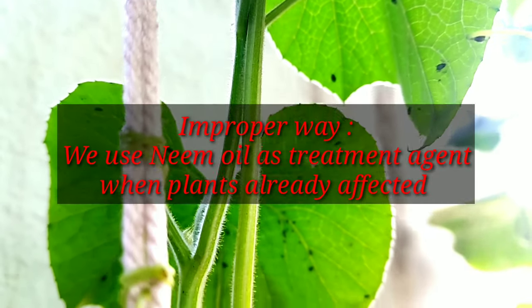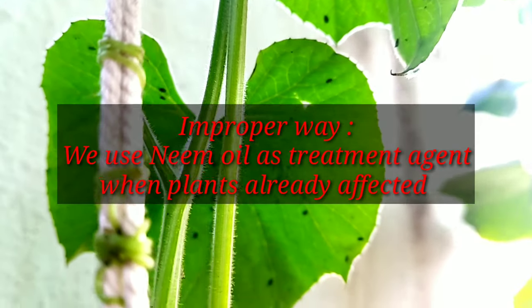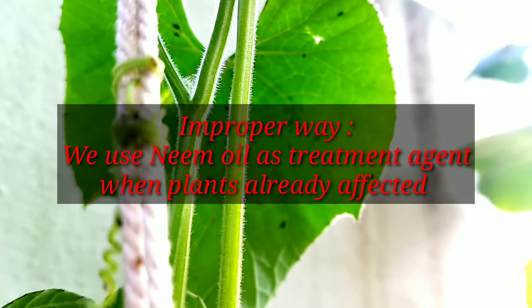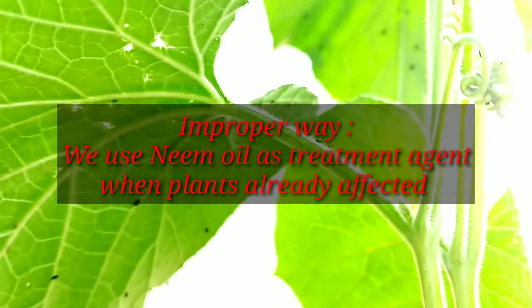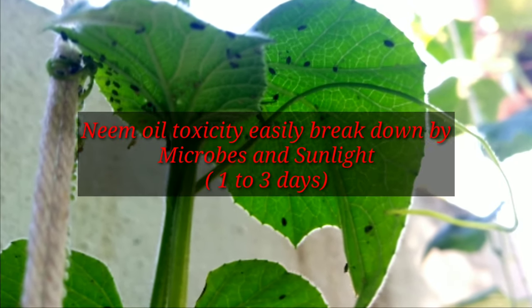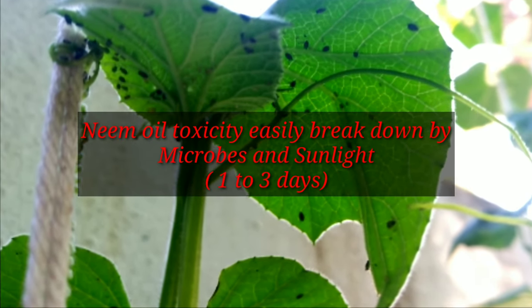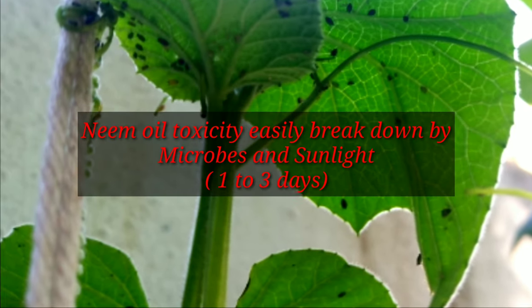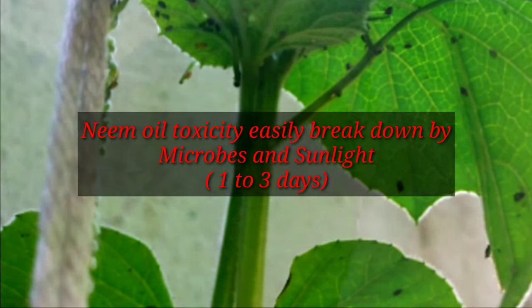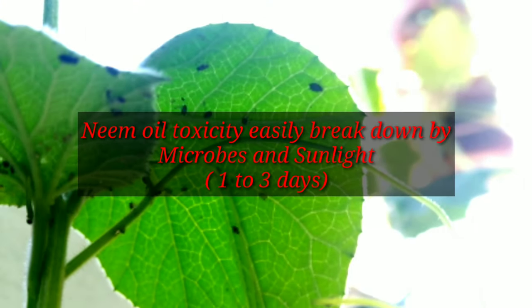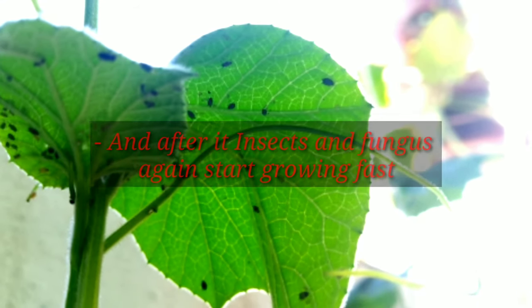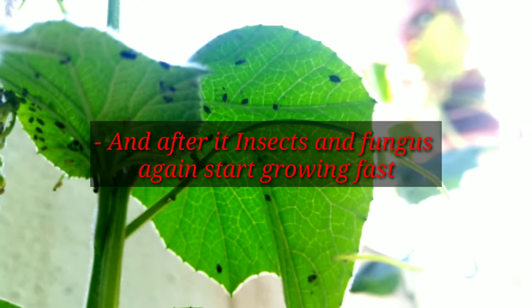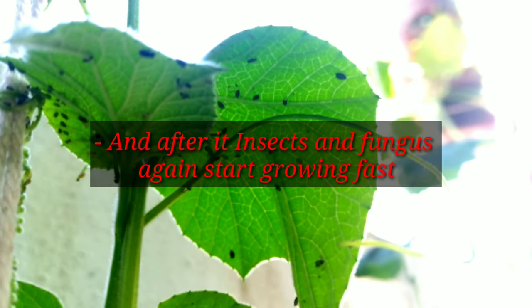The first and most common mistake is that we use neem oil as a treatment agent only when our plants are already affected by insects and fungal disease. No doubt it works, but one hidden fact is that neem oil's toxic component is easily broken down by microbes and sunlight very fast — roughly within one to three days. When its effect wears down, insects and fungus start growing their colonies again.